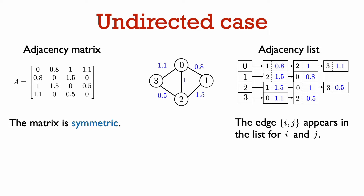Now let's talk about the undirected case. Consider the edge between vertex 0 and 1 in the picture, which has weight 0.8. In the adjacency matrix and adjacency list representations, we essentially view this edge as two directed edges of weight 0.8: one going from vertex 0 to vertex 1 and one going from vertex 1 to vertex 0. So in the adjacency matrix, both the (0,1) entry and the (1,0) entry of the matrix have the value 0.8.